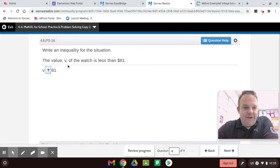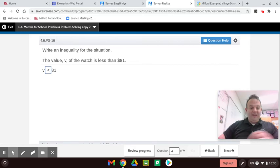The value, V, of the watch is less than 81. Now, guys, does that include 81? No, it doesn't. It's less than 81, so we've got to use the less than sign. And, by the way, guys, I'm going to foreshadow what we're going to be doing next lesson.